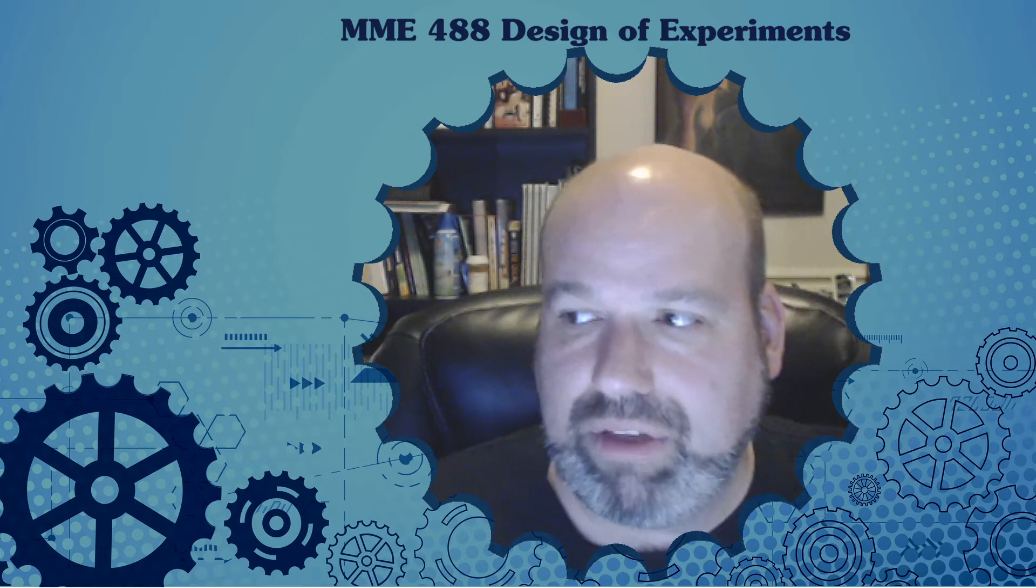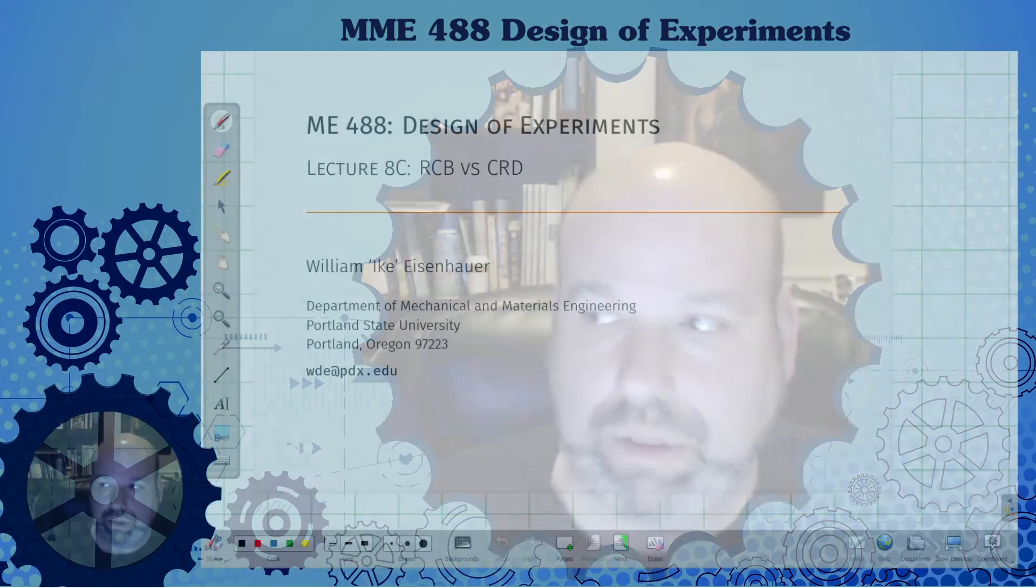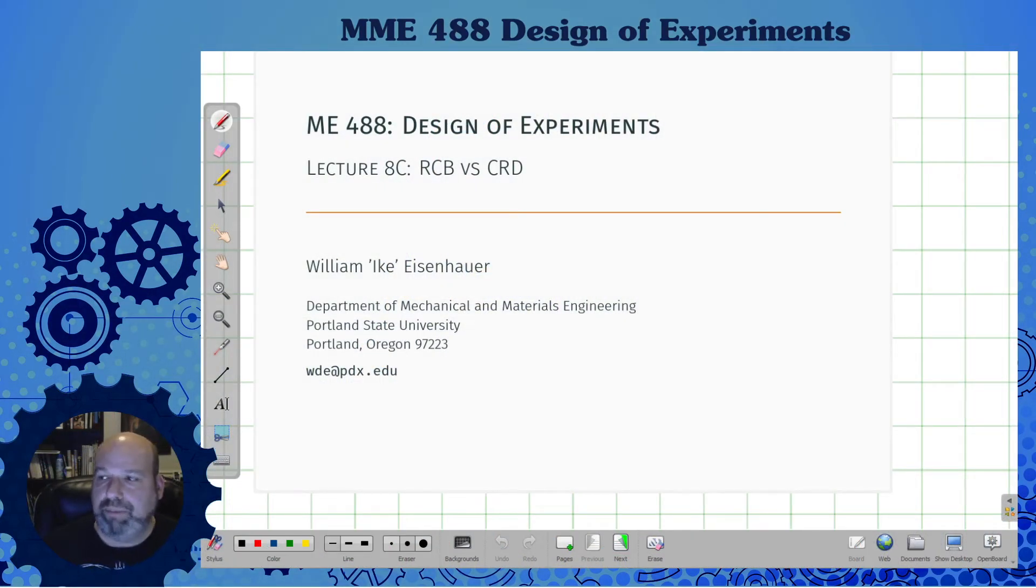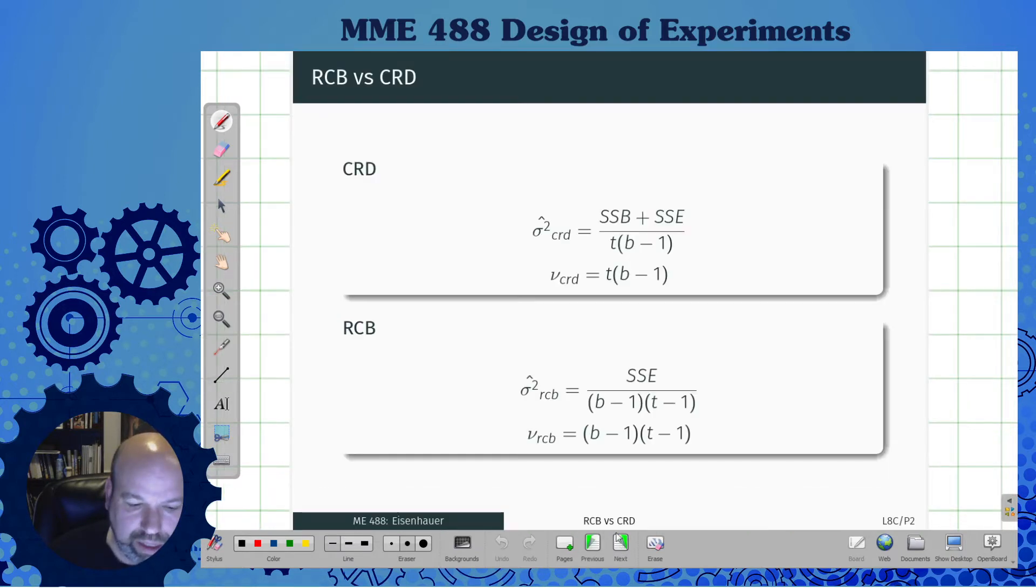Let's get started. This is basically comparing a randomized control block to the completely randomized design. The same thing applies to Latin squares and other types of control block experiments. When we looked at a randomized control block, we had a variance that was equal to the sum of the squares of the block and the sum of the squares due to the error.